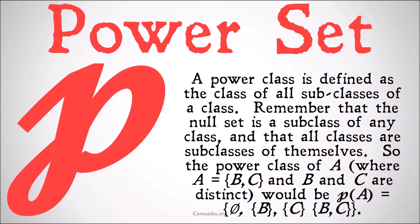So the power class of A, where A is equal to {B, C}, or the class of B and C, and of course B and C are distinct, would be the set of, or the class of, the null set, the class of B, the class of C, and the class of B and C. Because those are all of the possible subclasses of B and C.